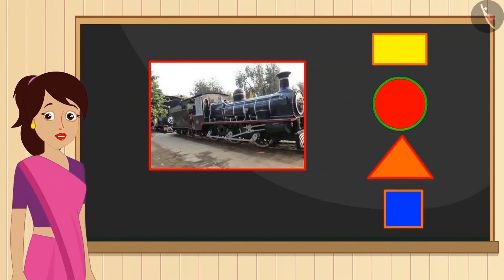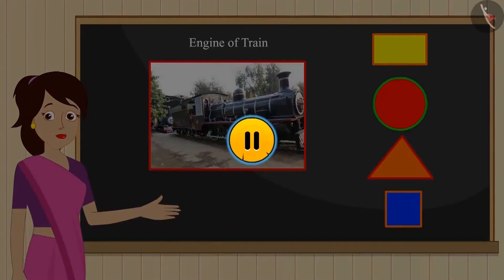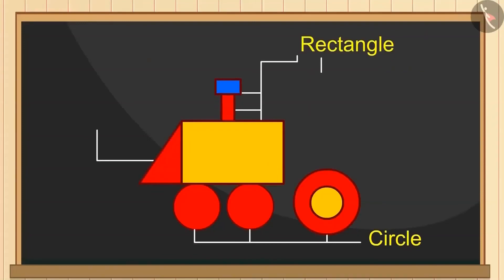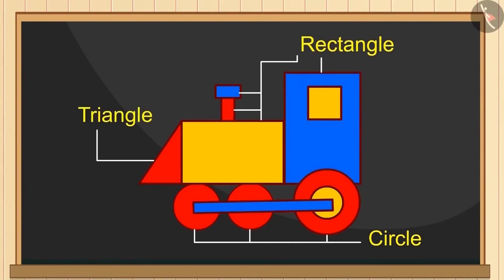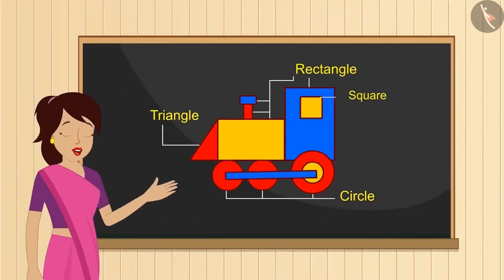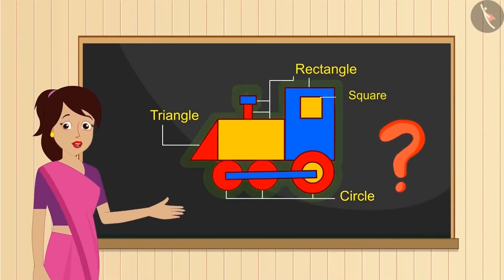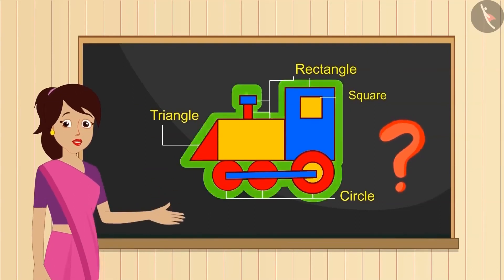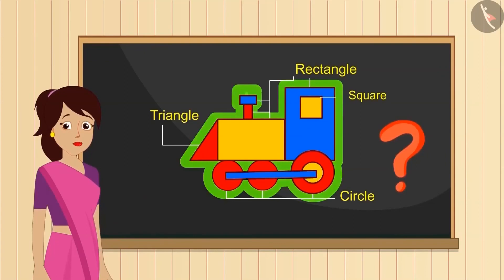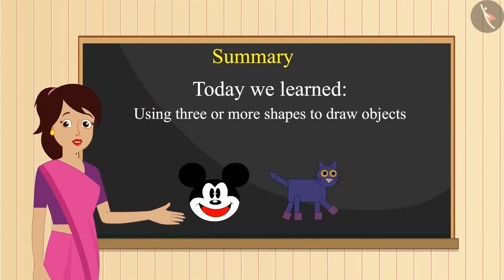All of you must have seen the train. So come on, today let's draw its engine with the help of rectangle, circle, triangle, and square. If you want, then you can pause the video over here and think. See this, its wheels are like a circle and its chimney is made of two rectangles, rectangle to draw the whole engine, and one window in the shape of a square. So how was that, children? Can you tell me the total number of rectangles, squares, triangles, and circles in this picture? You can seek help from your friends and teachers.